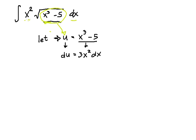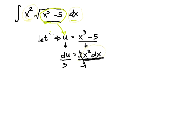But in our main function, we only have x squared dx. So how are we going to make things equal to our main equation? Since we only need x squared dx, we can divide both sides by 3. So what we have left is x squared dx on one side, and on the other side we have du over 3.